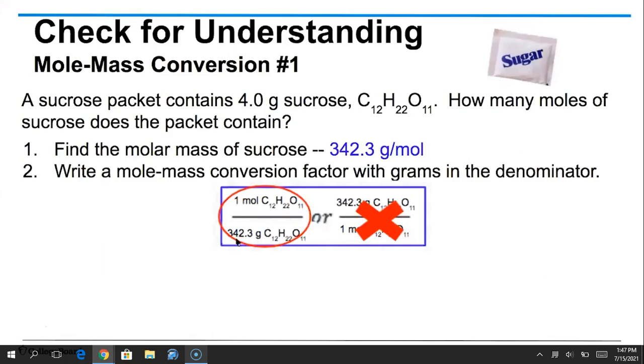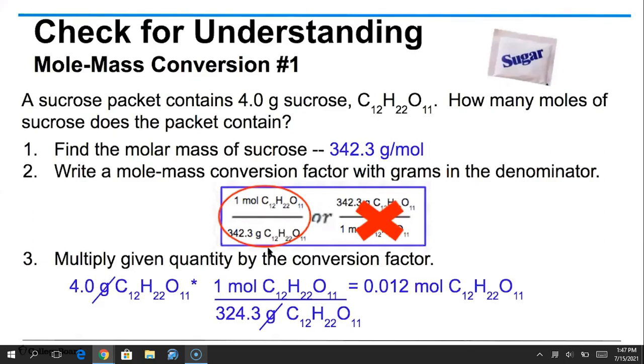Now you're going to write a mole mass conversion with grams in the denominator. So here is the one that you want. It's got 342.3 grams, our molar mass in grams, in the denominator, and then we have one mole of sucrose in the numerator. And then you're going to multiply the starting amount of 4 grams by this conversion factor and your grams will drop out. So we take our 4 grams of sucrose, we multiply, grams drops out, and we end up with 0.012 moles of sucrose.